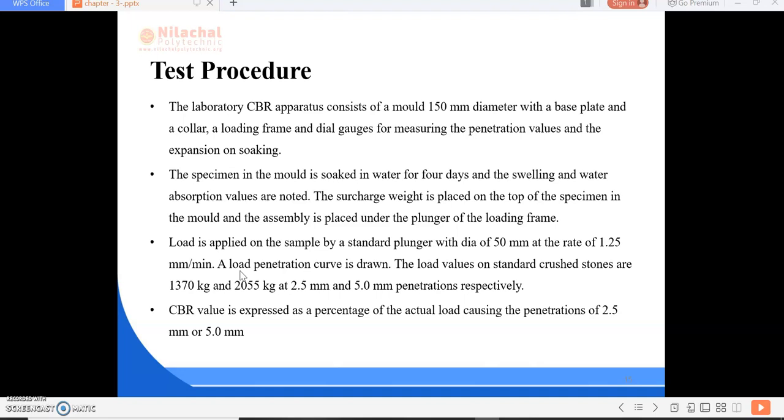The laboratory CBR apparatus consists of a mold 150 mm diameter with a base plate and a collar, a loading frame, and dial gauges for measuring the penetration values and the expansion on soaking.